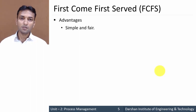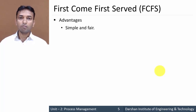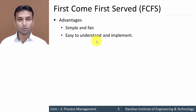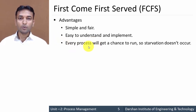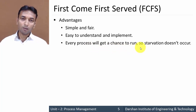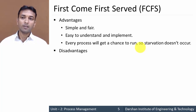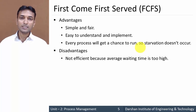The advantages of the FCFS algorithm are: it is simple and fair — each process gets a chance to execute fairly. It is easy to understand and easy to implement using a FIFO queue. Every process will get a chance to run, so no starvation occurs. There is also no possibility of deadlock.